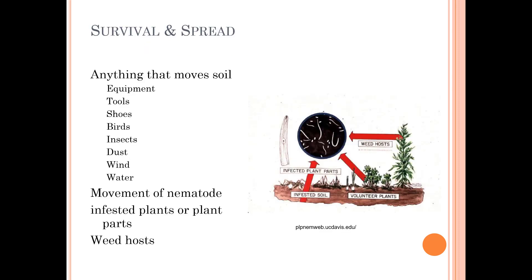For survival and spread: anything that moves soil — equipment, tools, shoes, birds, insects, dust, wind, water, movement of nematode-infested plants or plant parts — can spread nematodes. Weed hosts and volunteer plants from the previous year are also sources.